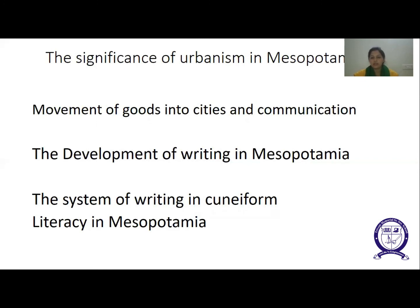Third, there must be a social organization in cities. Fuel, metal, various stones, wood, etc. come from many different places for city manufacturers. Organized trade, storage, and deliveries of grains or other food items from the villages to the cities were controlled and supervised by the rulers. These are the points of significance of urbanism in Mesopotamia.